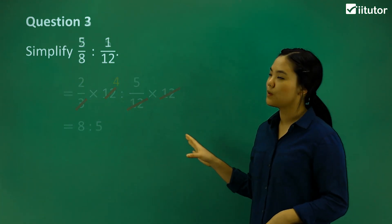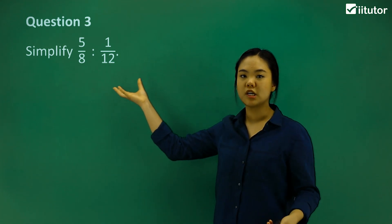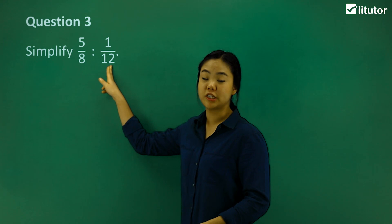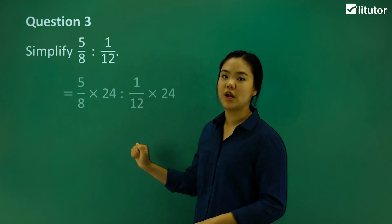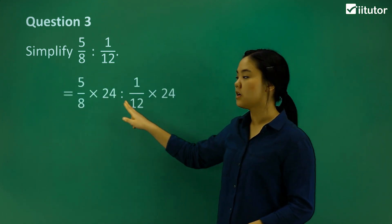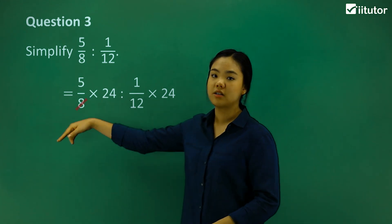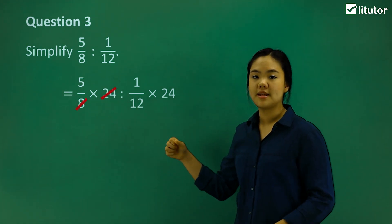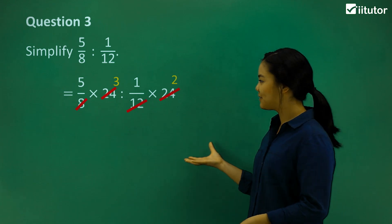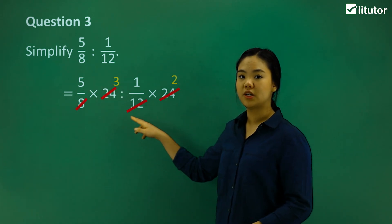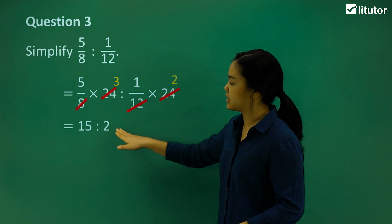Let's do question 3. We have 5 eighths to 1 twelfth, and we want to simplify that. What is the smallest common multiple of the denominators? The answer is 24. So we multiply by 24 — 5 eighths times 24, and 1 twelfth times 24. 24 divided by 8 is 3, and 24 divided by 12 is 2. So we have 5 times 3 to 1 times 2, which is 15 to 2. That's the simplified ratio.